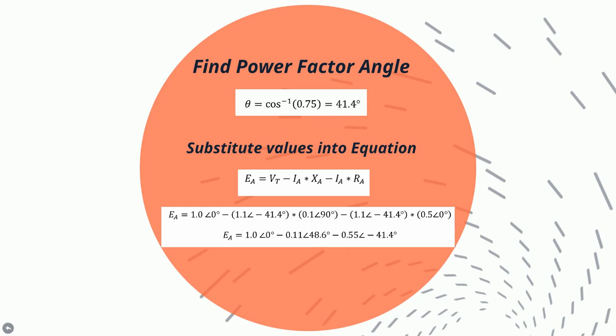Typically, you should assume that the voltage angle is zero degrees. Thus, in this problem, the current will lag by 0.75 power factor, which will result in a negative angle for the armature current. So the angle is shown below as negative 41.4 degrees.